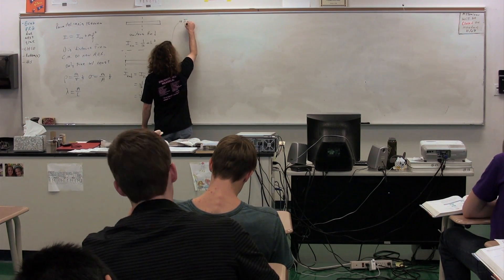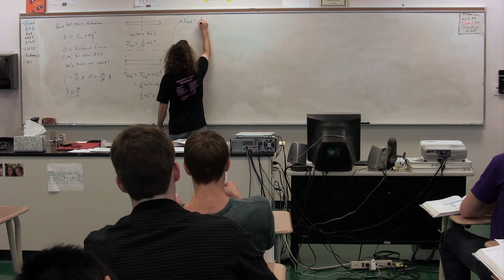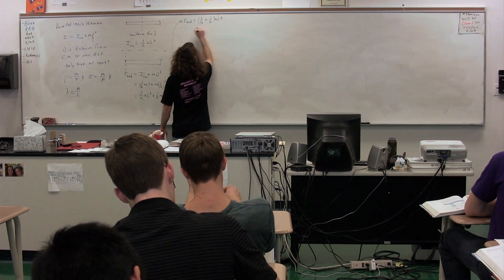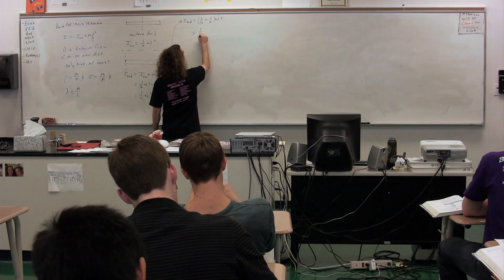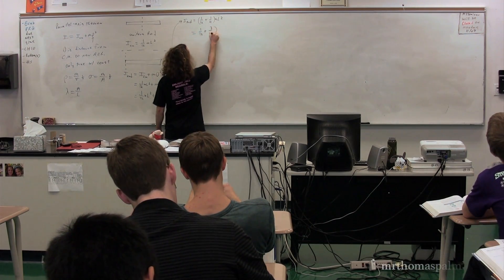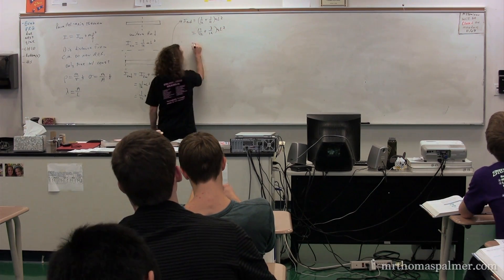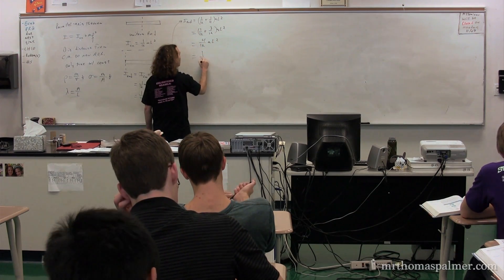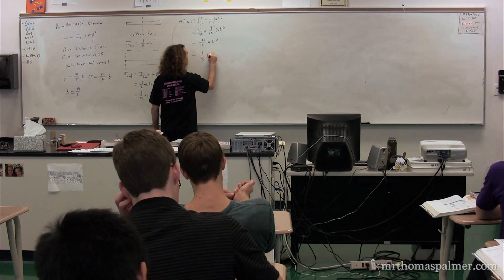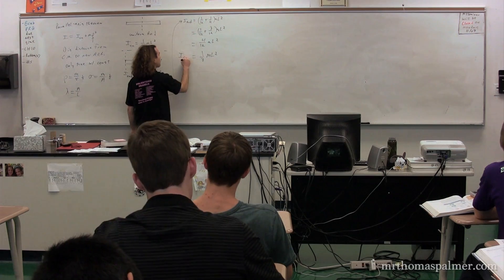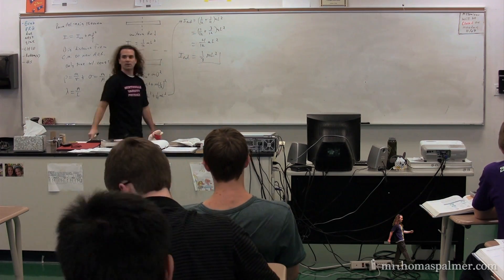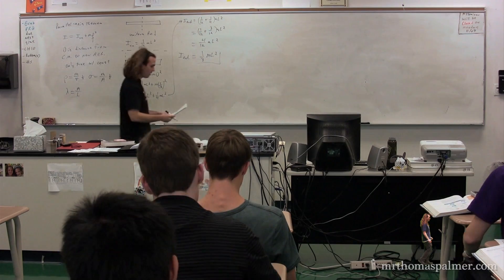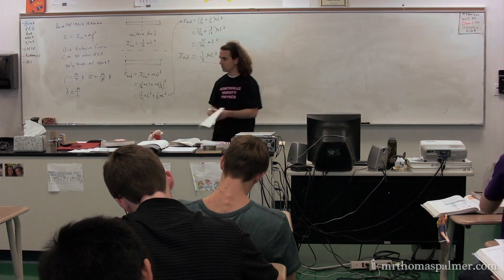So 1/12 mL squared plus 1/4 mL squared. The moment of inertia about the end is going to be equal to (1/12 + 1/4) mL squared, which is (1/12 + 3/12) mL squared, which is 4/12 mL squared, or 1/3 mL squared — which we already derived. So you can see how the parallel axis theorem works.